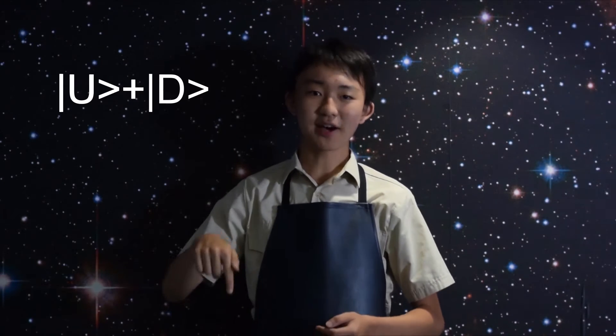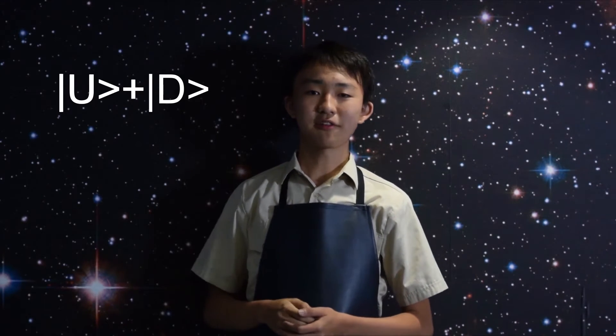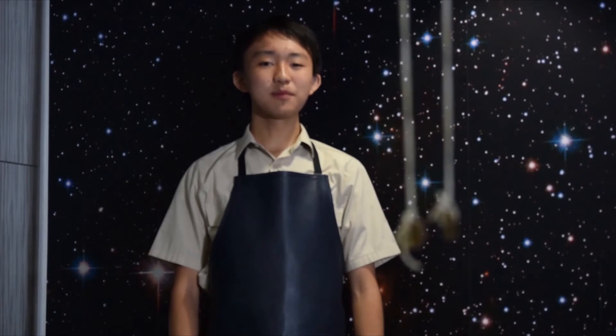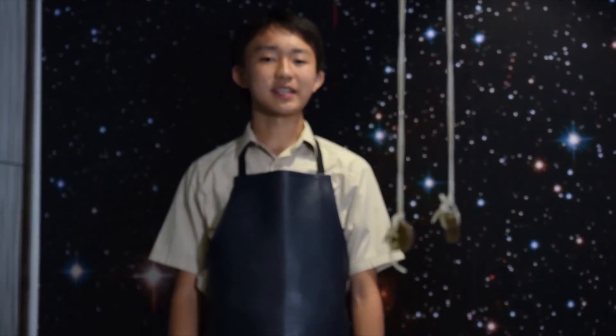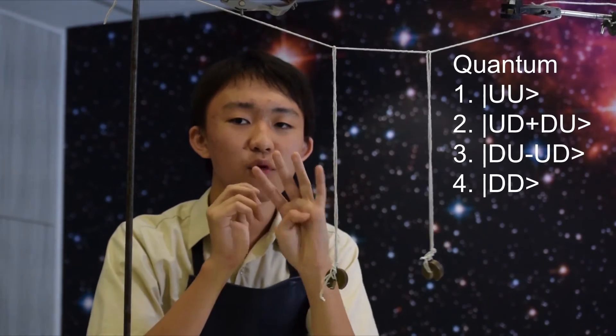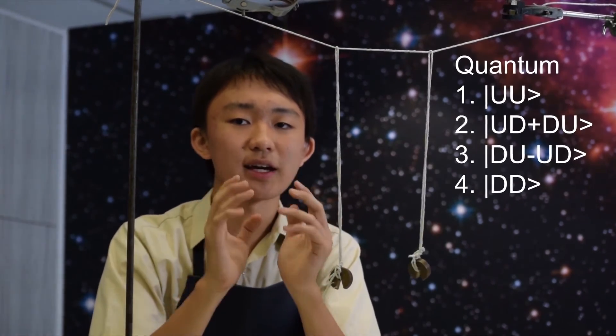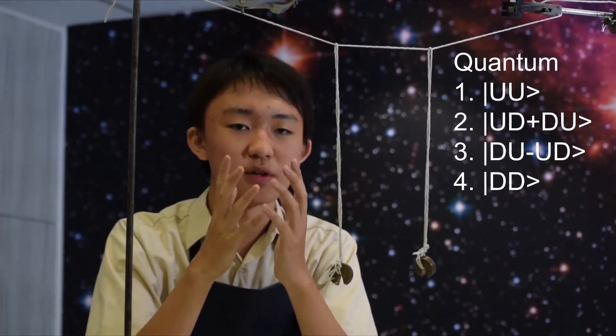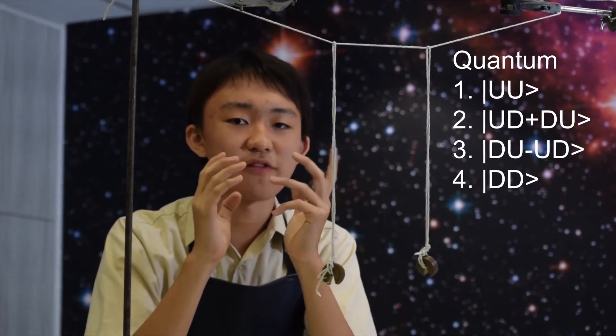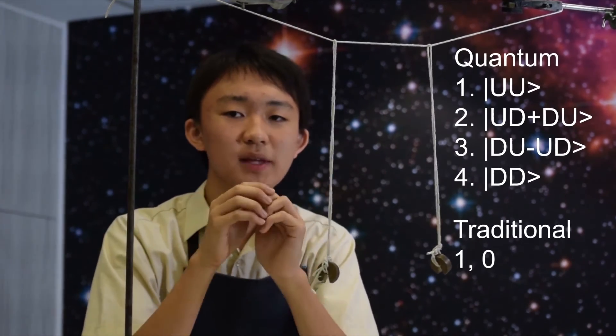So, until we definitively measure it, the electron is both in a spin up and a spin down concurrently. When we have two of these qubits together, we can make four computations — four distinct values — unlike a conventional computer, which can only ever have two: one and zero.